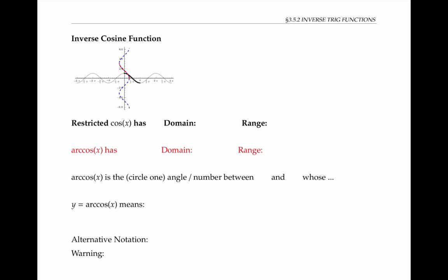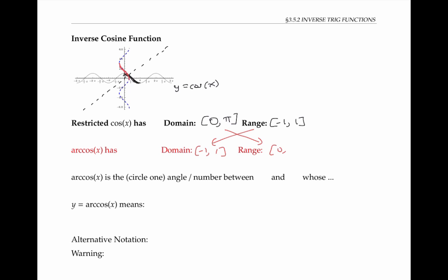Let's go through the same process to build an inverse cosine function. We start with a graph of cosine of x, we flip it over the line y equals x to get the blue dotted line. But the blue dotted line is not a function, so we go back and restrict the domain of cosine x to just be between zero and pi. The resulting red graph now satisfies the vertical line test, so it's a proper inverse function. Our restricted cosine has domain from zero to pi and range from negative one to one. And so our inverse function, arc cosine, has domain from negative one to one and range from zero to pi.